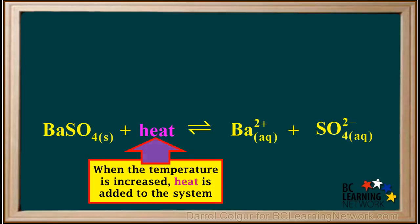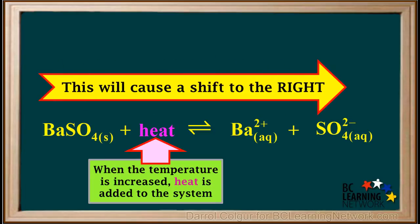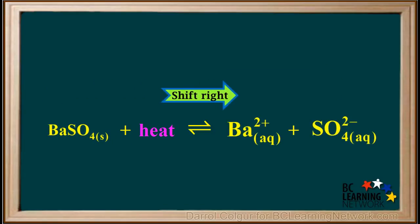When the temperature of a system is increased, it means heat is added to this endothermic system. According to Le Chatelier's principle, the system can compensate for the added heat by shifting away from the heat term in order to use up the excess heat. In this case, the heat term is on the left, so it causes a shift to the right, which occurs like this.